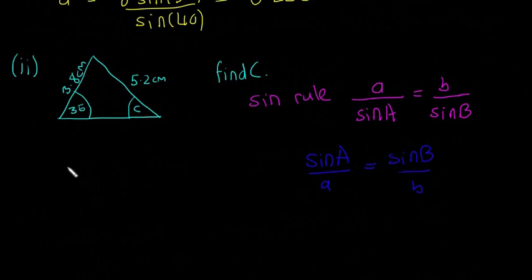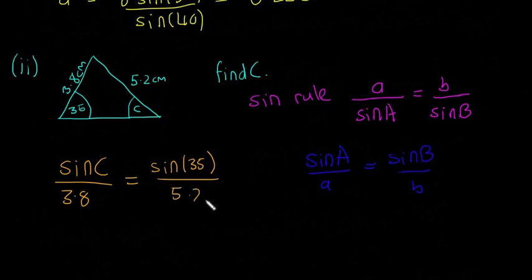It doesn't really matter about the letters. It's just to show which letter it is on our diagram. So sine of C in this case, and then the side opposite it, it's going to be 3.8. Sine of C divided by 3.8 is going to be equal to sine of 35. So again, the other angle, 35 degrees, and then divided by 5.2.